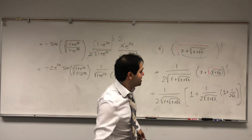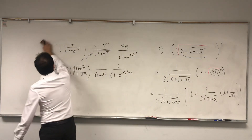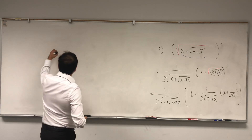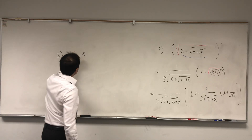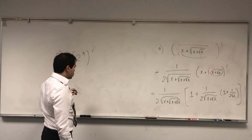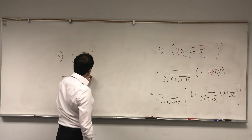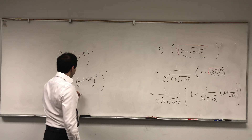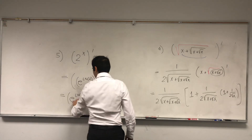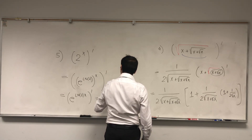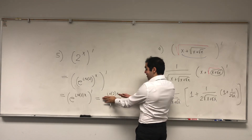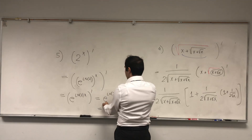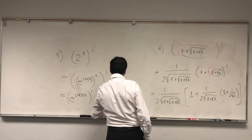Last but not least, the nice thing is with the chain rule we can differentiate even more complicated functions — functions that we didn't know how to differentiate before, like 2 to the x. Because notice, 2 is the same as e to the ln of 2, so 2 to the x is the same as e to the ln 2 times x. We want to differentiate this: first you differentiate the e, giving e to the ln 2 times x, then times the derivative of ln 2 times x, which is just ln of 2, since it's a constant times x.